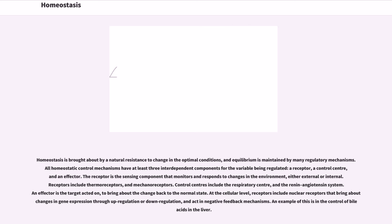Homeostasis is brought about by a natural resistance to change in the optimal conditions, and equilibrium is maintained by many regulatory mechanisms. All homeostatic control mechanisms have at least three interdependent components for the variable being regulated: a receptor, a control center, and an effector.